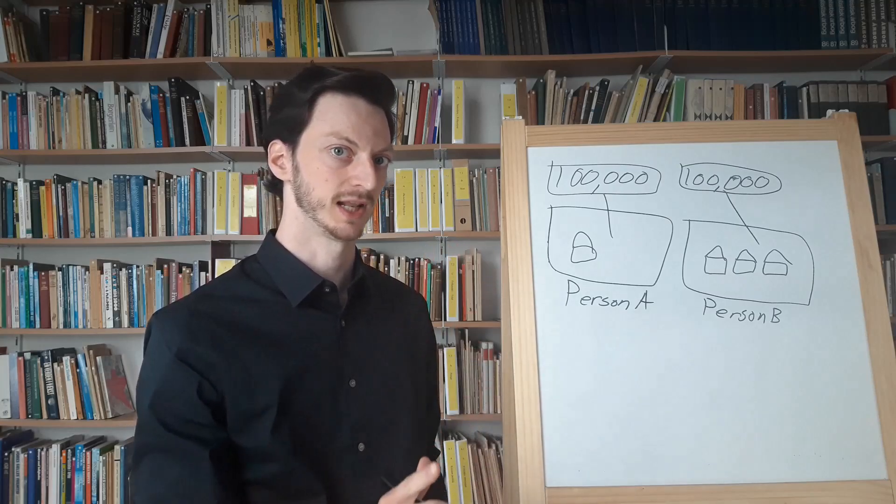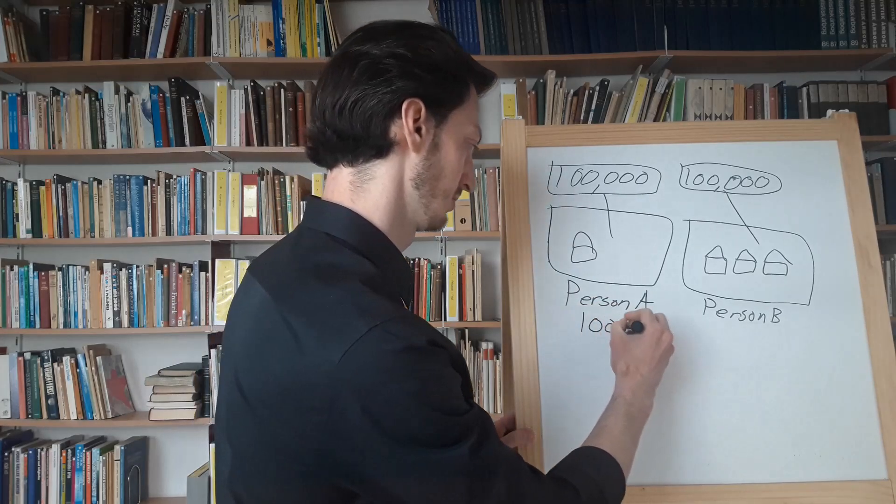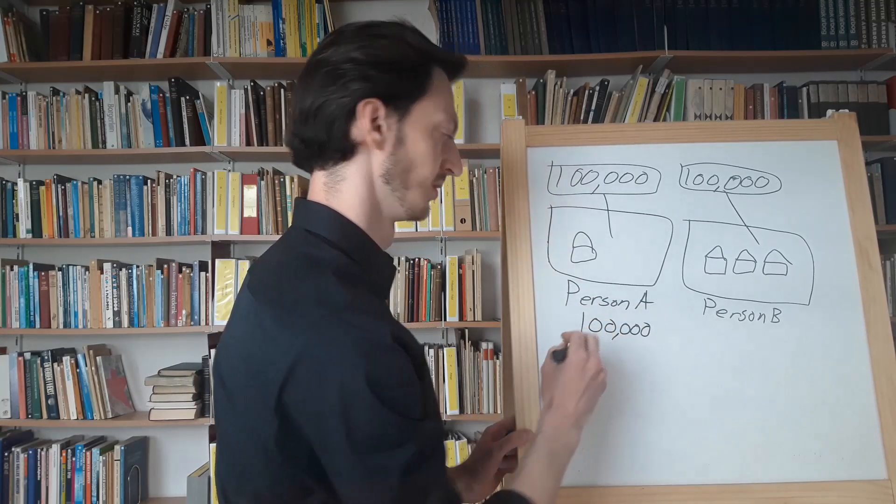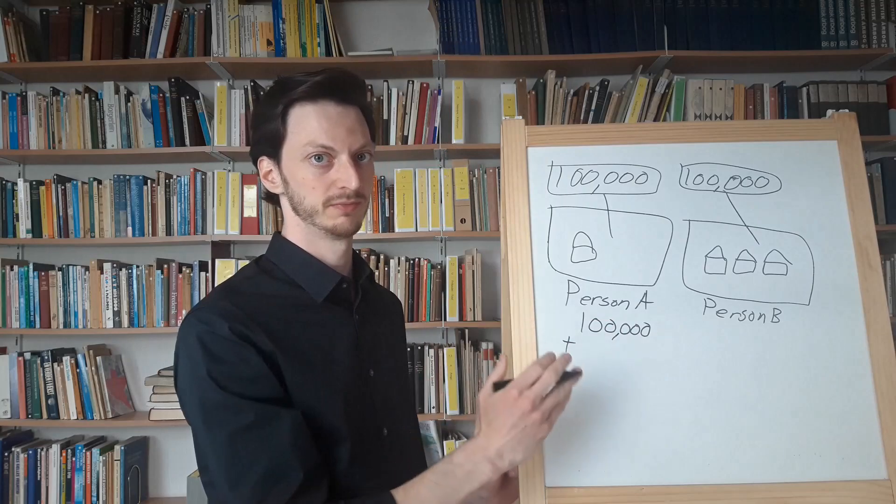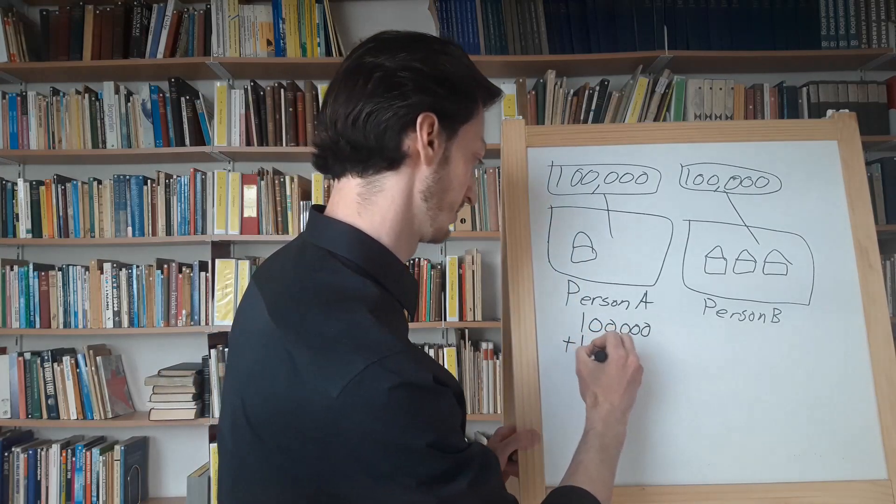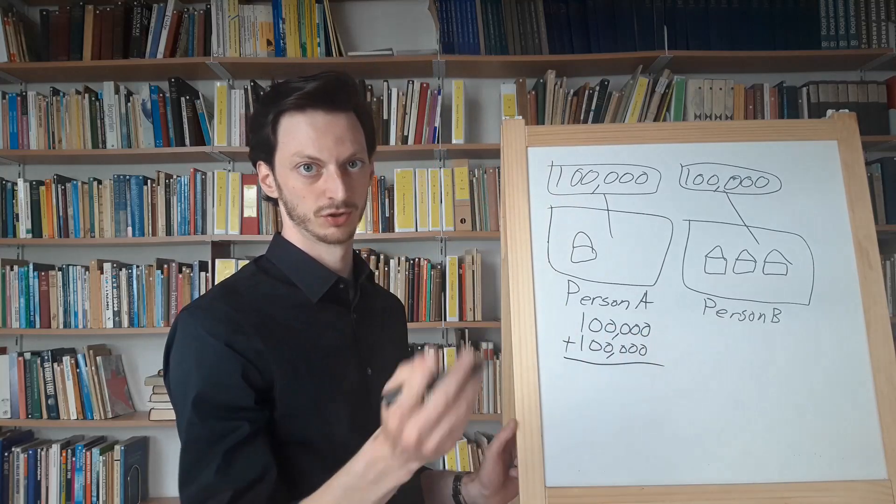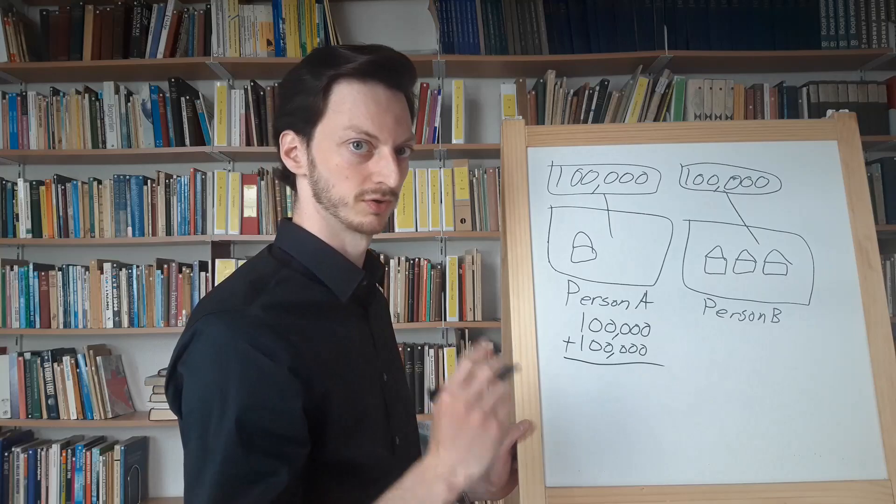So for Person A, the value of the land is 100,000. For simplicity, we just assume that the value of the home is also 100,000. This gives him a total property value of 200,000.